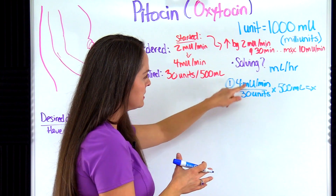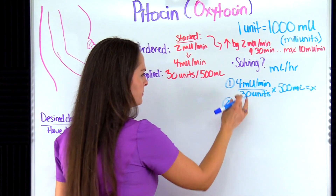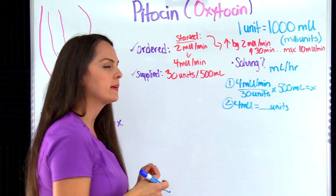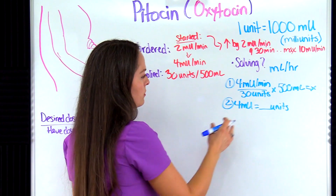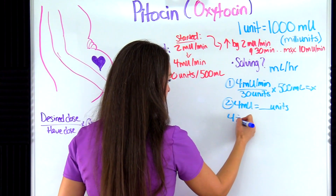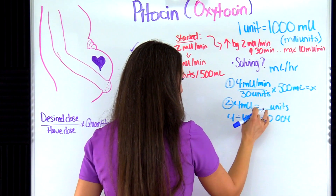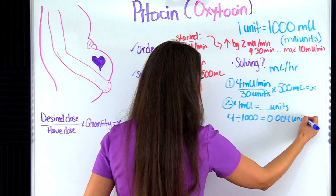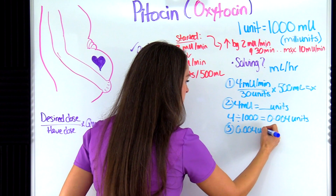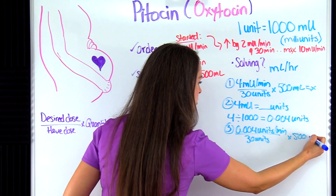We have milliunits here and units there — similar but different — so we need to convert. We need to get four milliunits into units. Going from something small to something large, we divide: four divided by 1000 equals 0.004 units. So four milliunits is equivalent to 0.004 units. Now I'll plug that into the original formula: 0.004 units per minute over 30 units, times 500 milliliters, equals x.